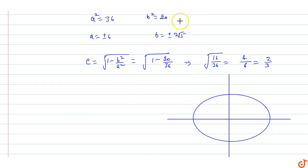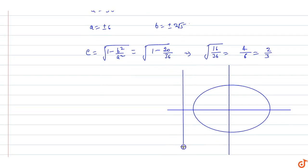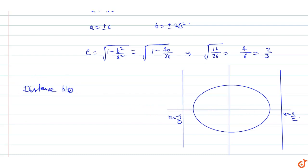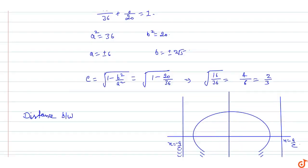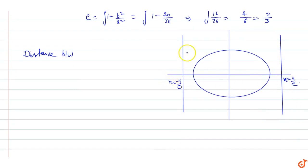For this ellipse, one directrix is at x = a/e and the other is at x = -a/e. So the total distance between the two directrices is 2a/e.